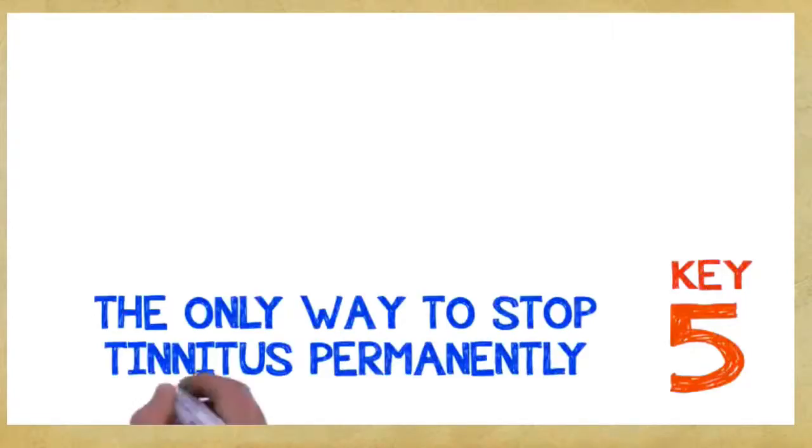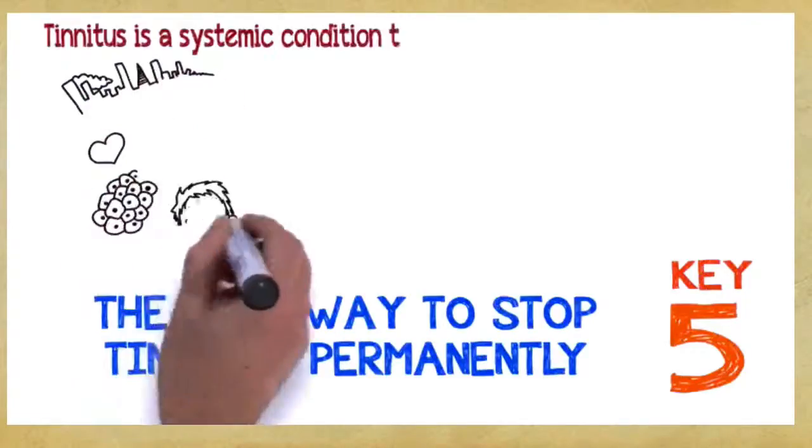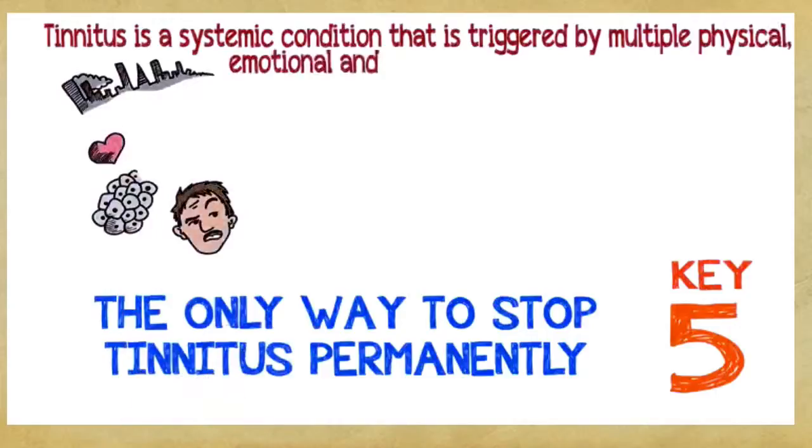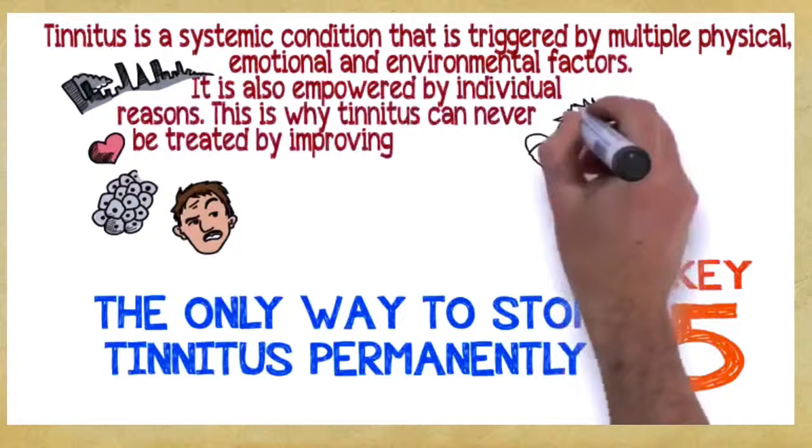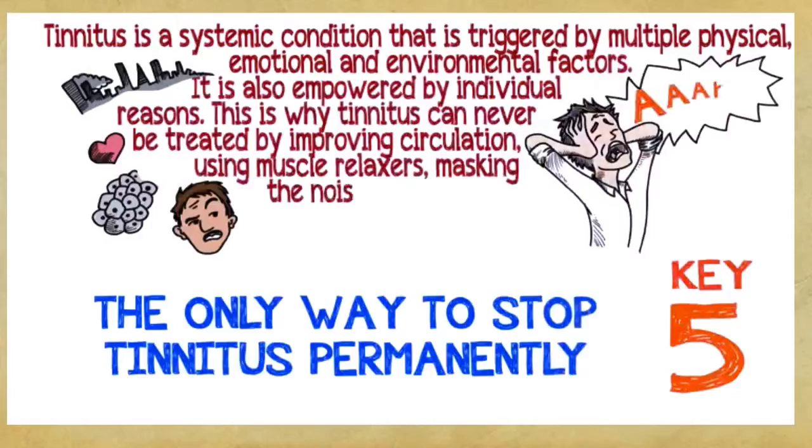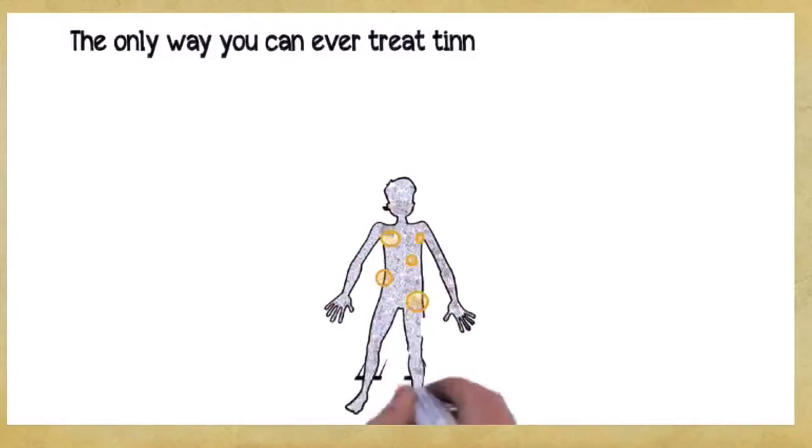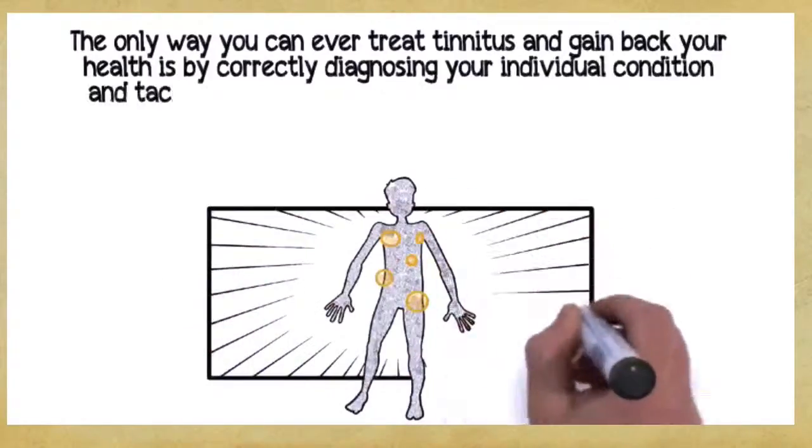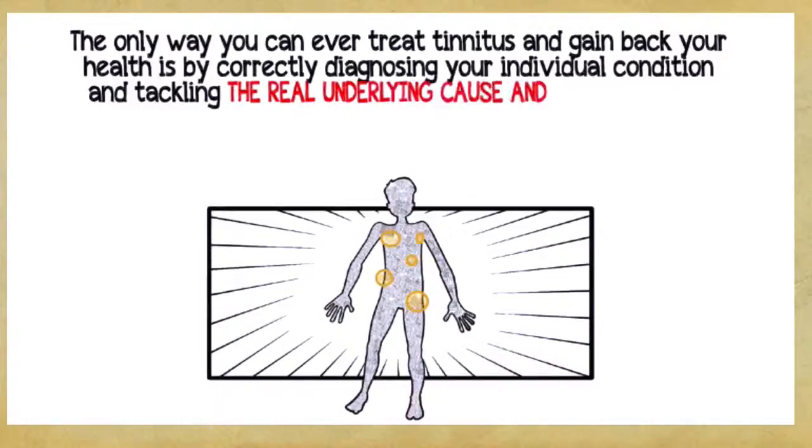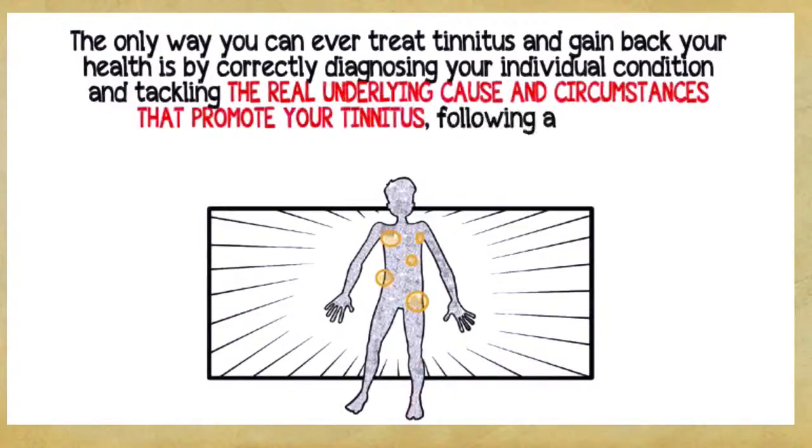Key number five. The Only Way to Stop Tinnitus Permanently. Tinnitus is a systemic condition that is triggered by multiple physical, emotional, and environmental factors. It's also empowered by individual reasons. This is why tinnitus can never be treated by improving circulation, using muscle relaxers, masking the noise, or cutting a nerve in your auditory system. The only way you can ever treat tinnitus and gain back your health is by correctly diagnosing your individual condition and tackling the real underlying cause and circumstances that promote your tinnitus, following a complete, multi-dimensional, holistic program.